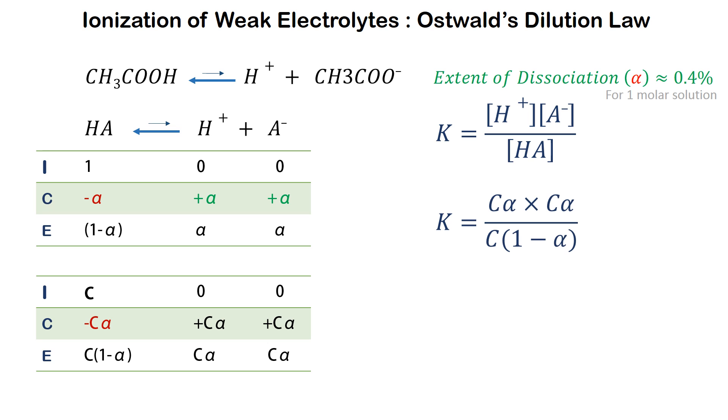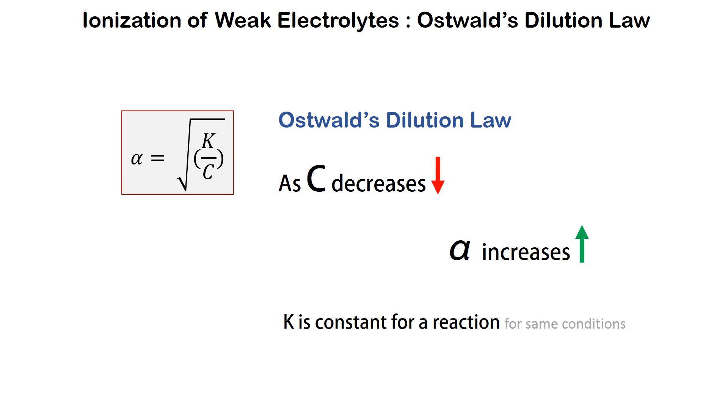The equilibrium constant can be written as K equals C alpha squared, or alpha equals square root of K by C for a monoprotic acid like HA. Here we see that alpha is inversely proportional to square root of C. So as the concentration of the weak electrolyte decreases in water, the degree of dissociation of the electrolyte increases, and that is because K is constant for a reaction.